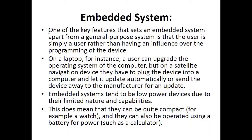On a laptop, a user can upgrade the operating system, but on a satellite navigation device they have to plug the device into a computer and let it update automatically, or send the device to the manufacturer for an update. Embedded systems tend to be low power devices due to their limited nature and capabilities, which means they can be quite compact — for example, a watch — small in size, and operated using a battery, such as a scientific calculator.